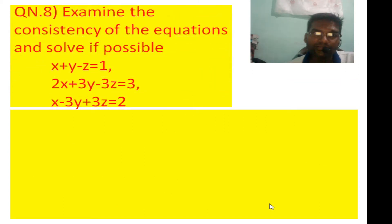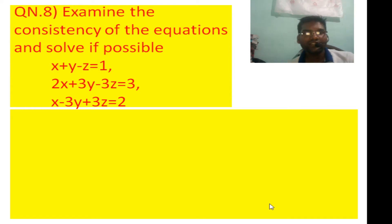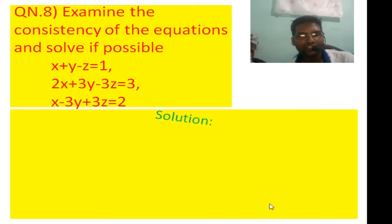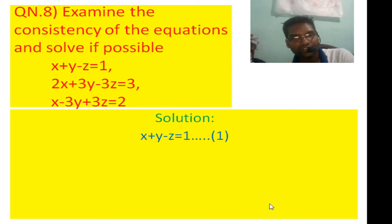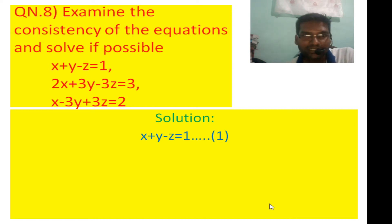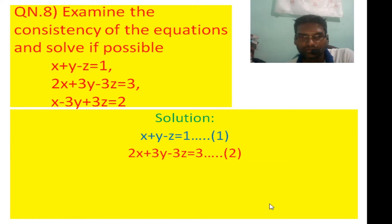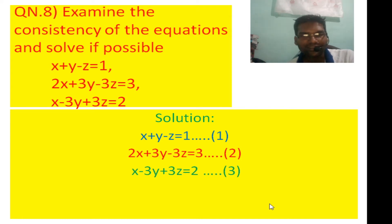Question number 8. The system of equations is: first equation x plus y minus z equals 1, second equation x plus 3y minus 3z equals 2, third equation x minus 3y plus 3z equals 2. We use row operations to eliminate the x variable.